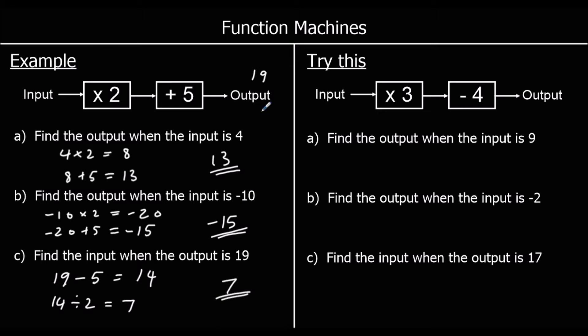So if we went forwards: 7 times 2 is 14, and 14 plus 5 is 19. Now one for you to try — give this one a go.